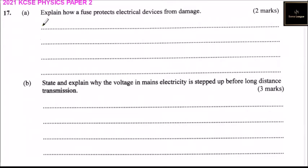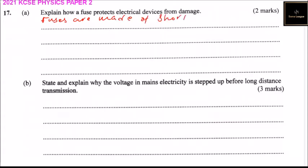Question number 17, part A: explain how a fuse protects electrical devices from damage. A fuse is made up of a thin wire. When there is excess current, it heats up and breaks the circuit. Fuses are made of short thin wire of low melting point.